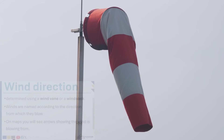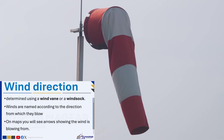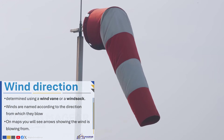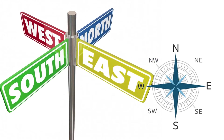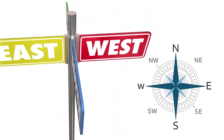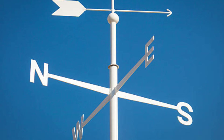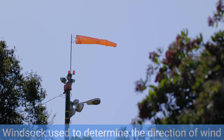Wind direction is determined using a wind vane or a windsock. Winds are named according to the direction from which they blow, described using compass points: north, south, east, west, northeast, northwest, southeast and southwest. We use these names to describe where the wind is coming from. For example, a westerly wind blows from west to east, and a northerly wind blows from north to south. A southeasterly wind blows from a southeast direction.